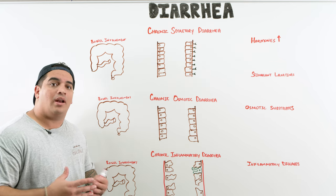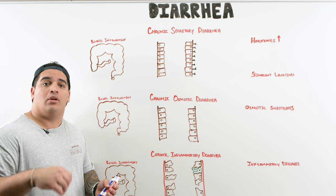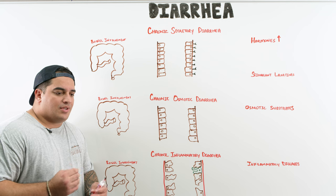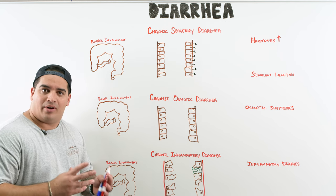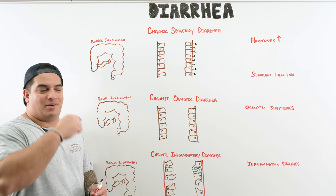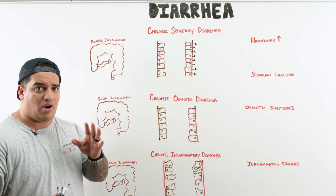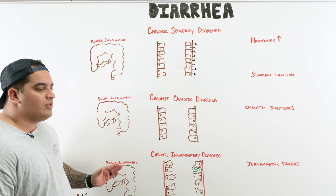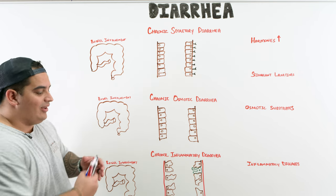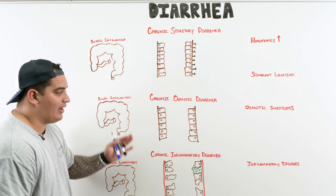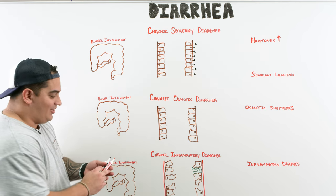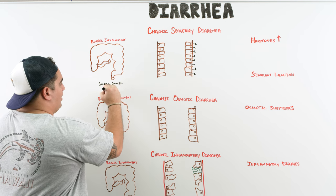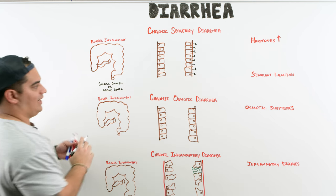With chronic diarrhea — at least three or more loose stools per day for more than 14 days — we think in three camps: secretory, osmotic, or inflammatory. Unlike acute diarrhea, all three types can affect any part of the bowel, including both small and large intestine.